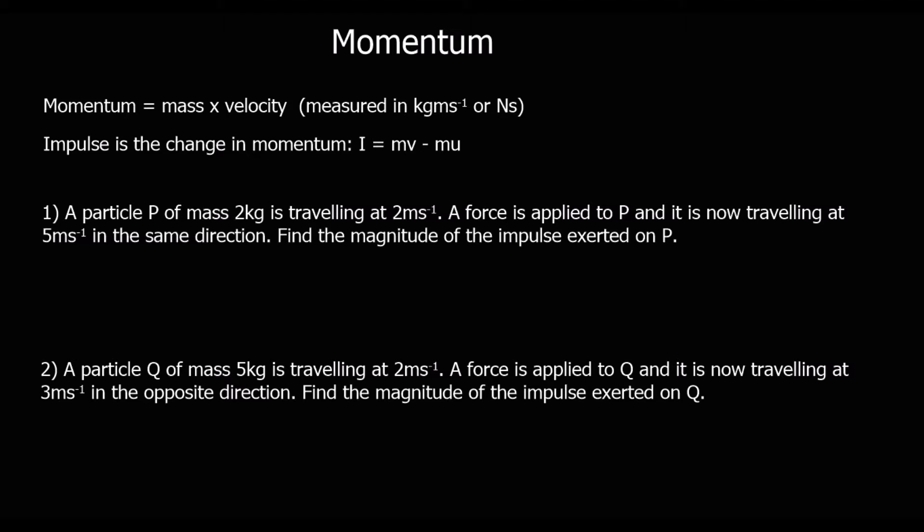You can think of momentum as how hard it is to stop an object. So how much momentum an object's got is a measure of how hard it is to stop. Impulse is the change in momentum.